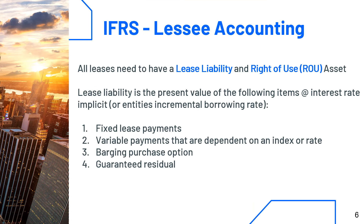Now let's look at IFRS lessee accounting. There's only one way to account for this, and that's to create a lease liability and a right-of-use asset. The lease liability is essentially the present value of the following items at the rate implicit, and if you can't find that rate, you can use the entity's incremental borrowing rate.